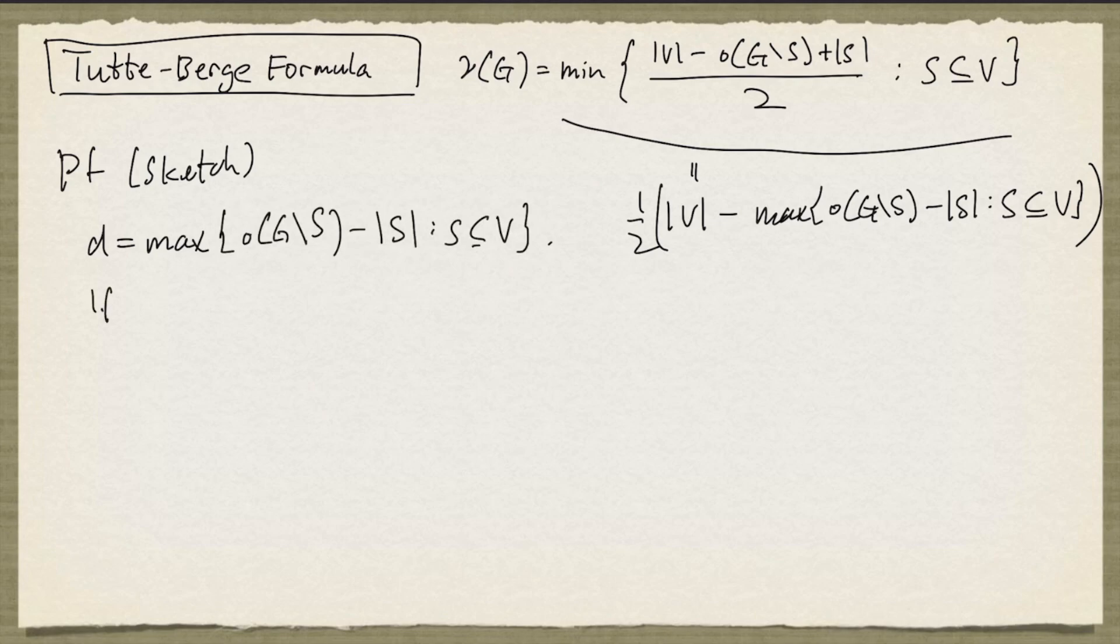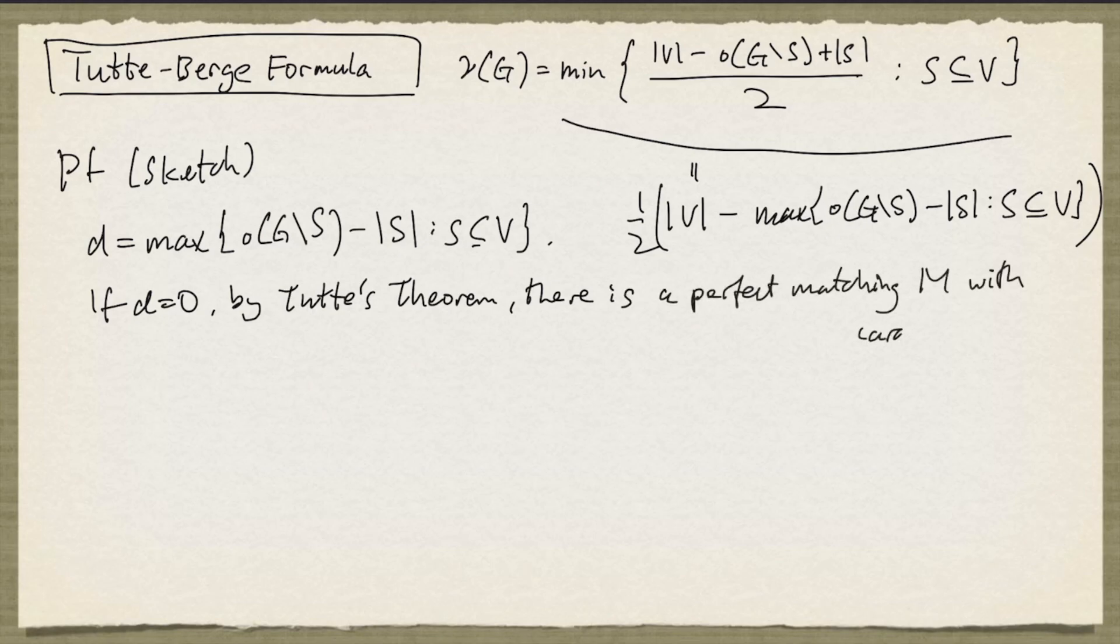Now if D is 0, then by Tutte's theorem, there is a perfect matching. And the number of edges in such a matching is the number of nodes divided by 2. So this case is taken care of.